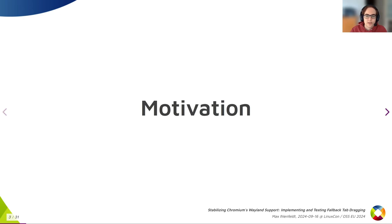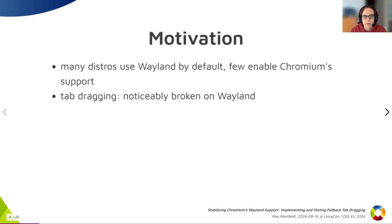For the motivation: many distributions use Wayland by default, have been doing so for a few years now, but only very few enable Chromium's Wayland support, which does exist. Gentoo has a compile-time option to use the Wayland support. Alpine Linux is, as far as I know, the only one that enables the native Wayland backend by default, and all the other distributions leave it as is, which means it will run via XWayland. So it seems we haven't reached parity with X11 yet. One of the things that is noticeably broken on Wayland is tab dragging. I have a video that I will show you later so that you can see for yourself what I mean by that.